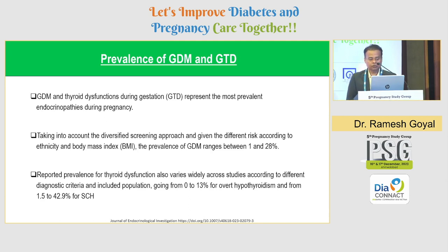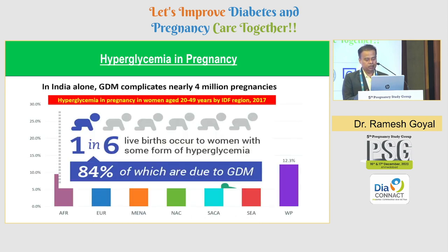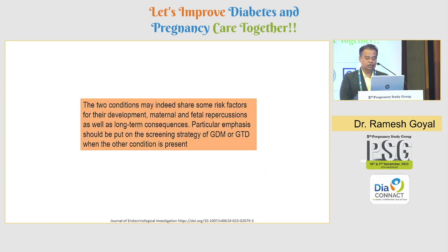These two conditions are the most prevalent endocrinopathies of pregnancy. Taking into account a diversified screening approach, given the different risk according to ethnicity and BMI, the GDM prevalence ranges between 1 to 28 percent, and the prevalence of thyroid dysfunction also varies from population to population, going from 0 to 13 percent for overt hypothyroidism and around 1.2 to 43 percent for subclinical hypothyroidism. Subclinical hypothyroidism is very common — this we all know. The two conditions may indeed share some risk factors for their development, as well as maternal and fetal repercussions and long-term consequences.